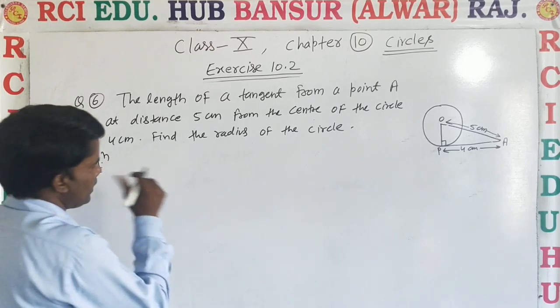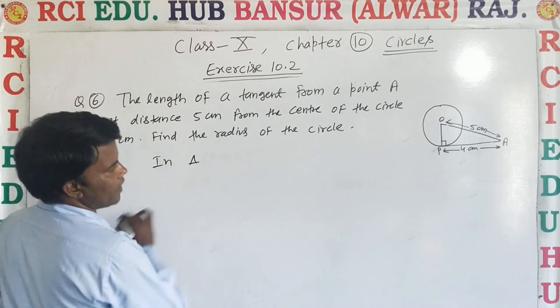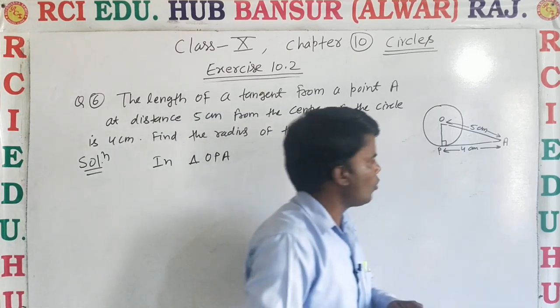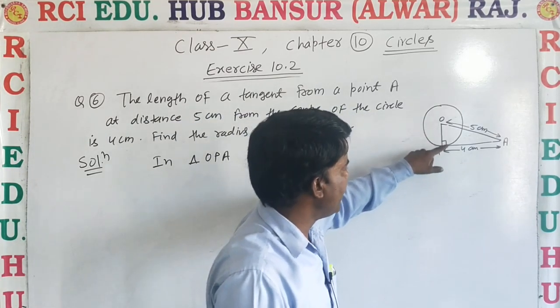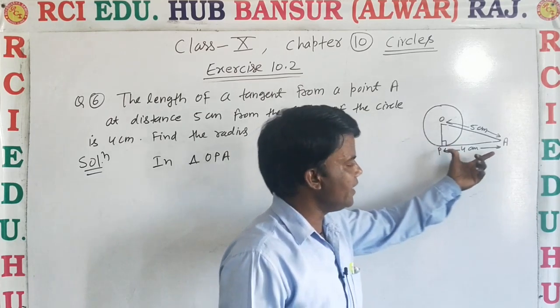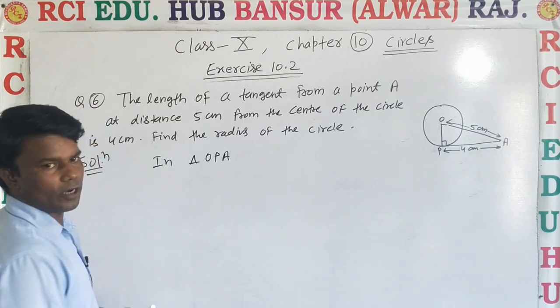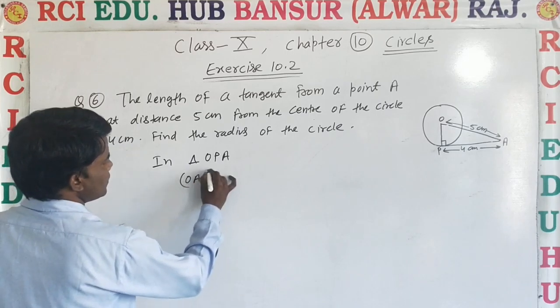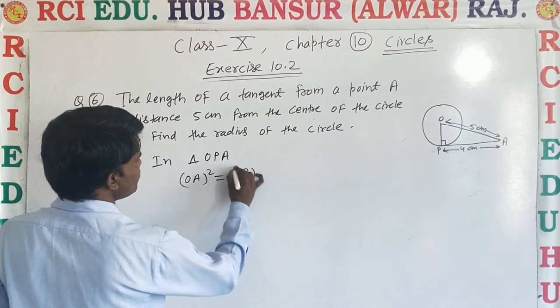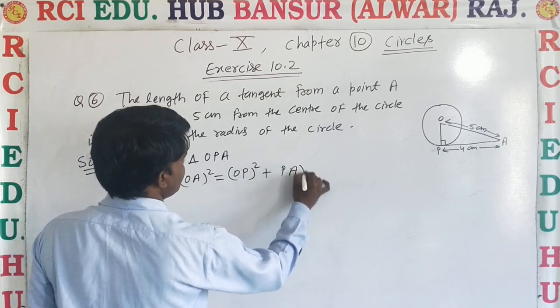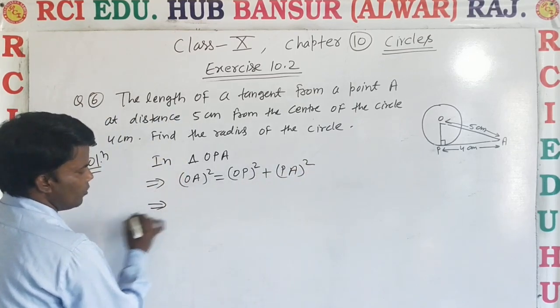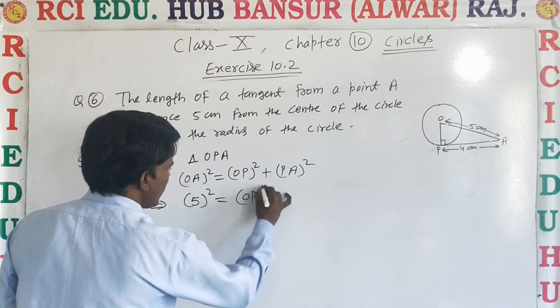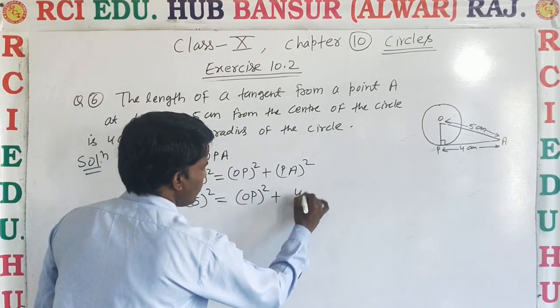In right triangle OPA, we know that opposite of 90 degree is hypotenuse, and this is perpendicular, and this is base. By using Pythagorean theorem, OA square is equal to OP square plus PA square. Put the values, OA is 5, 5 square, OP hame find karna hai, OP square, plus PA is 4, 4 square.